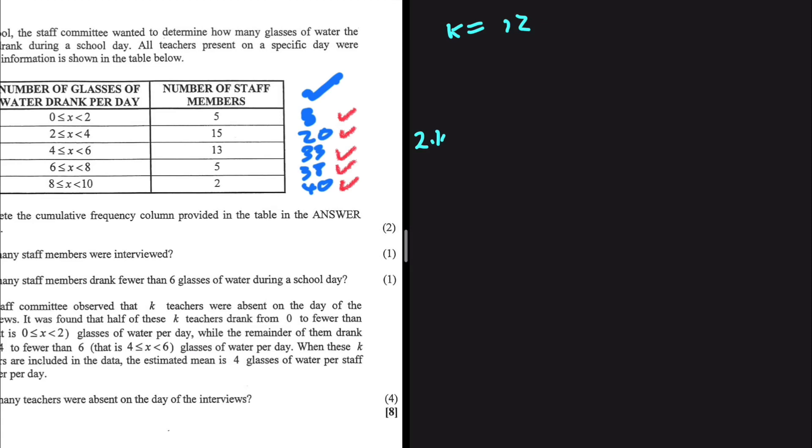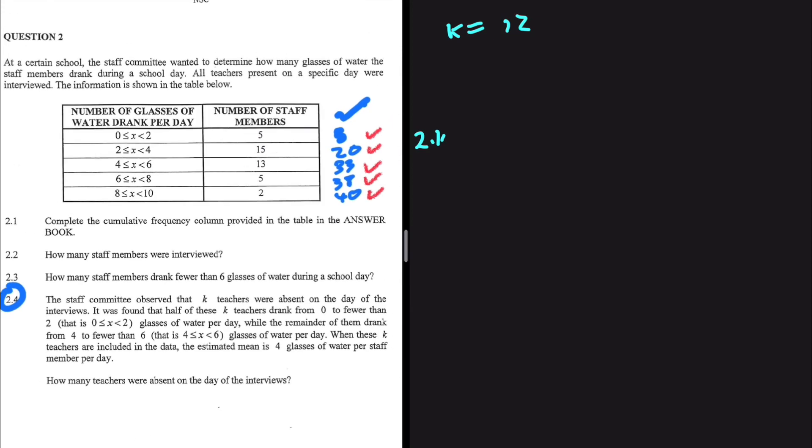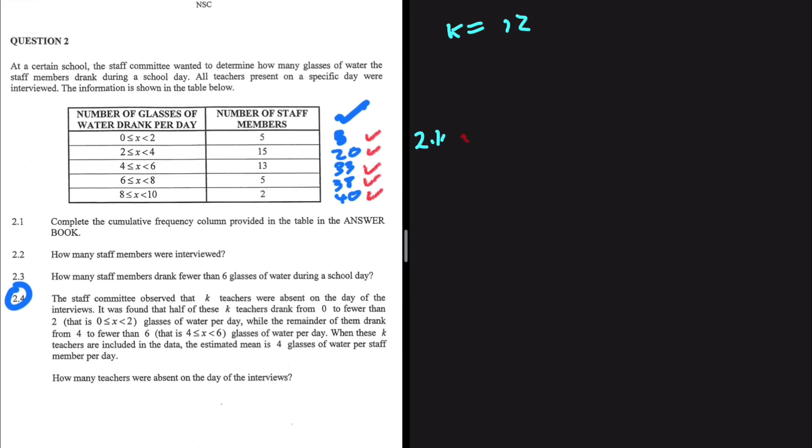So that is 2.1, we are done with that. 2.2, on the other hand, how many staff members were interviewed? The staff members that were interviewed, 40. That is the total number of staff members.